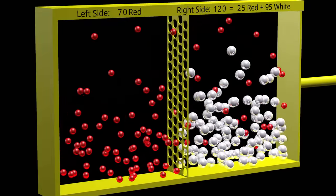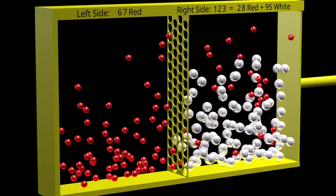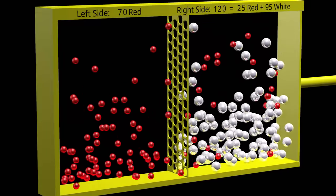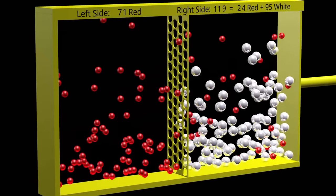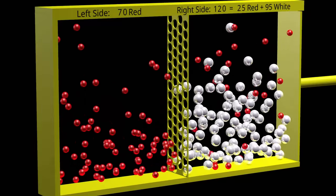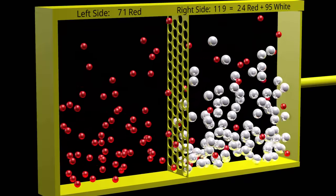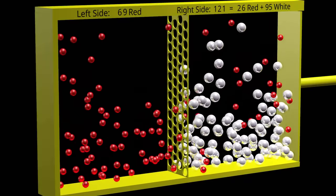In equilibrium conditions, there will therefore be some red particles on both sides of the membrane, whereas all the large white particles will always only be on the right side. This means that in an equilibrium condition, there will be a greater number of total particles on the right side of the membrane than on the left side. We call this process osmosis.